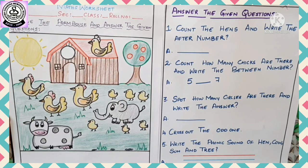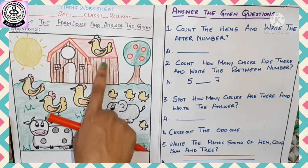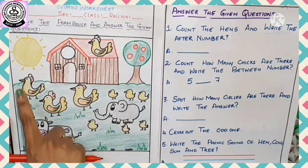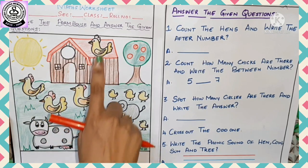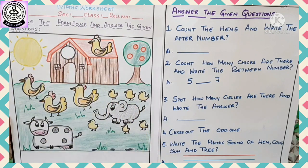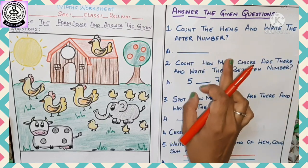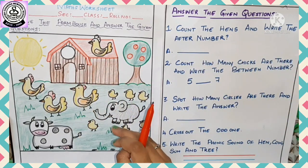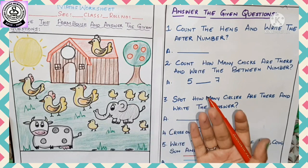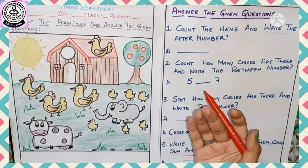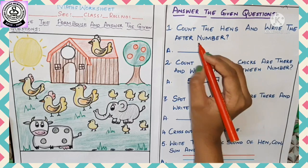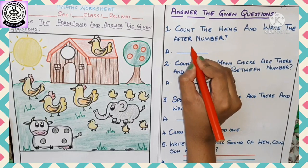But you are missing one hand — where is that hand? Yes, one hand is sitting on the farmhouse. So how many are there? One, two, three, and four — total four hands. Now the question says write the after number. How many hands are there? Four. What is the after number of four? Five! Very good, excellent — the answer is five.